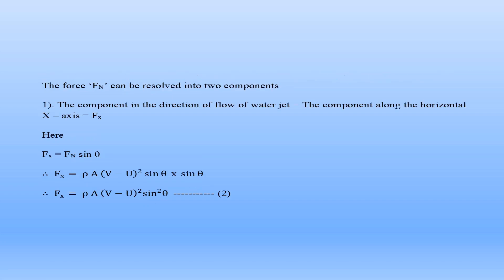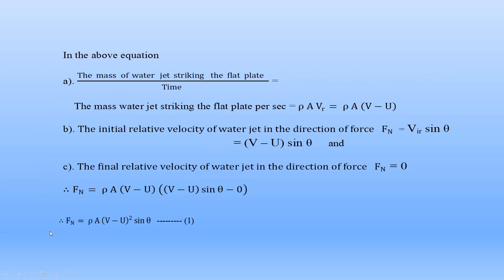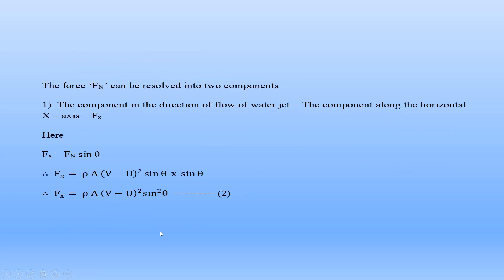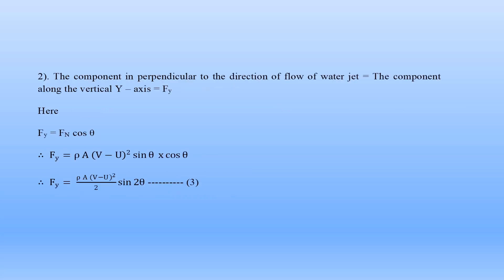In summary for this discussion: equation one is the normal force FN = rho·A·(V − U)²·sin(theta), derived by applying Newton's second law. Then the force exerted by the water jet on the moving inclined flat plate along x-axis is Fx = rho·A·(V − U)²·sin²(theta), and along y-axis Fy = [rho·A·(V − U)²/2]·sin(2theta).